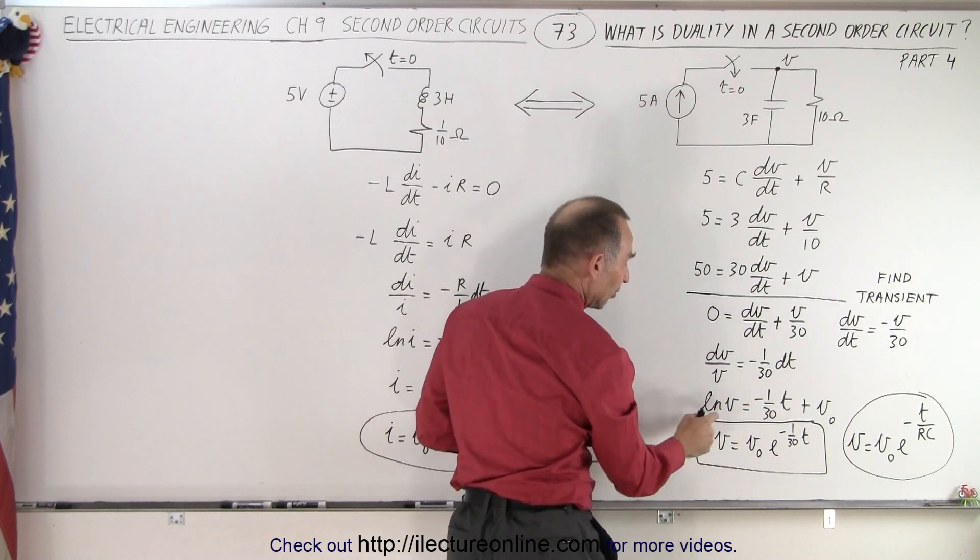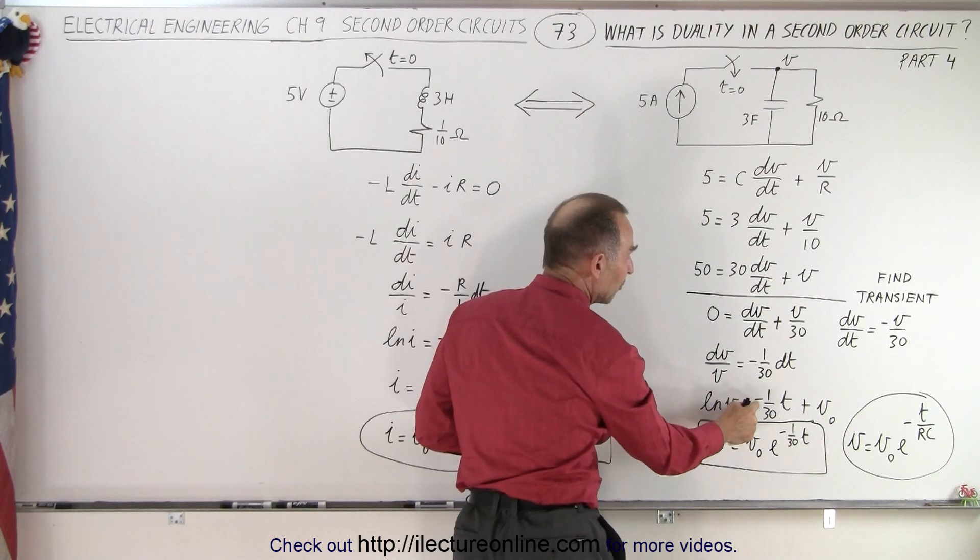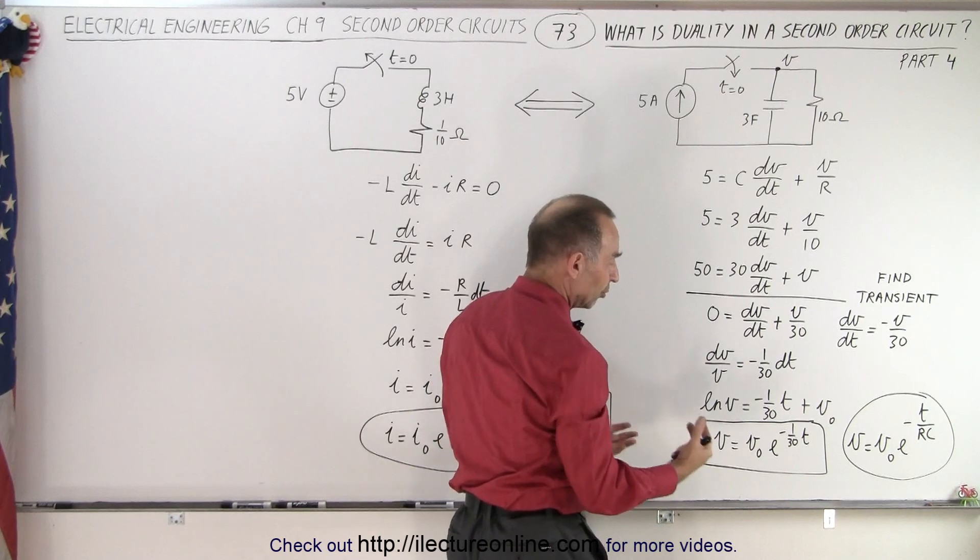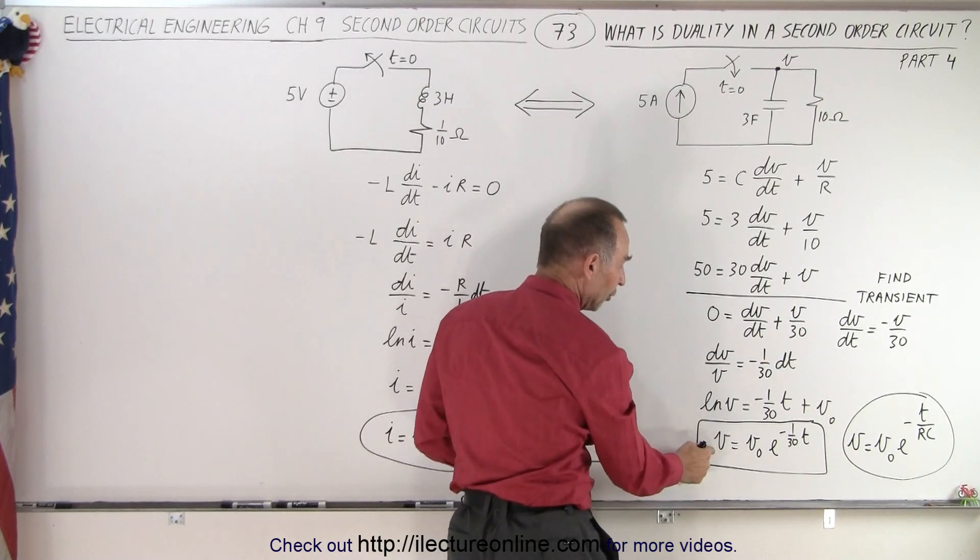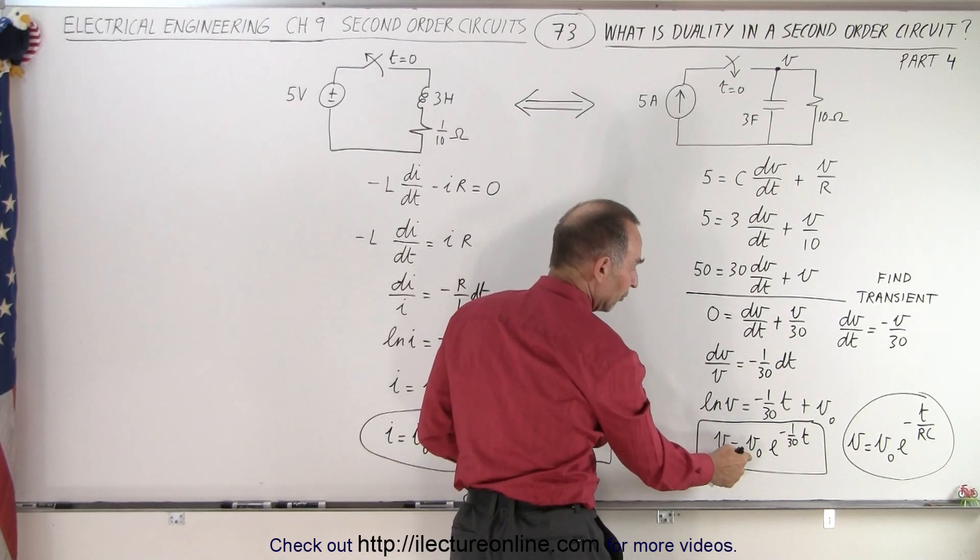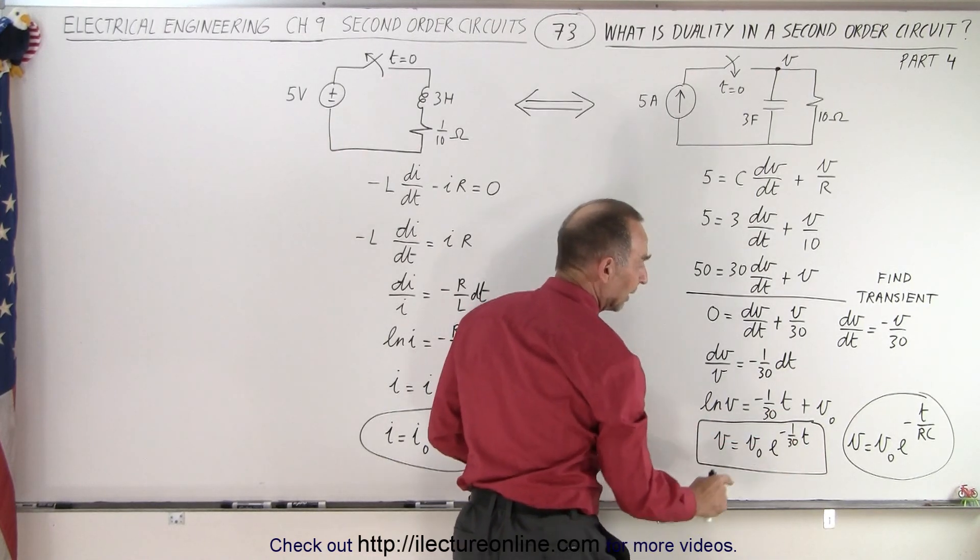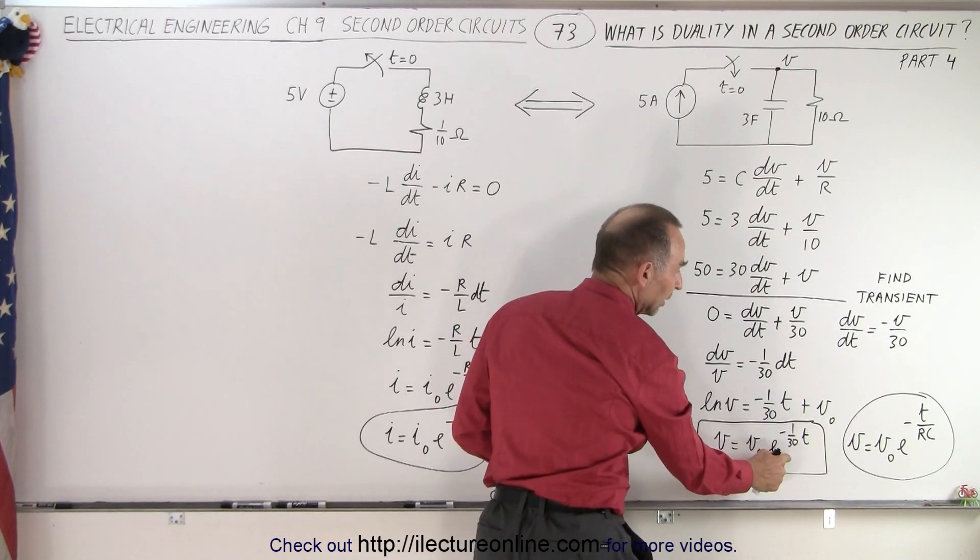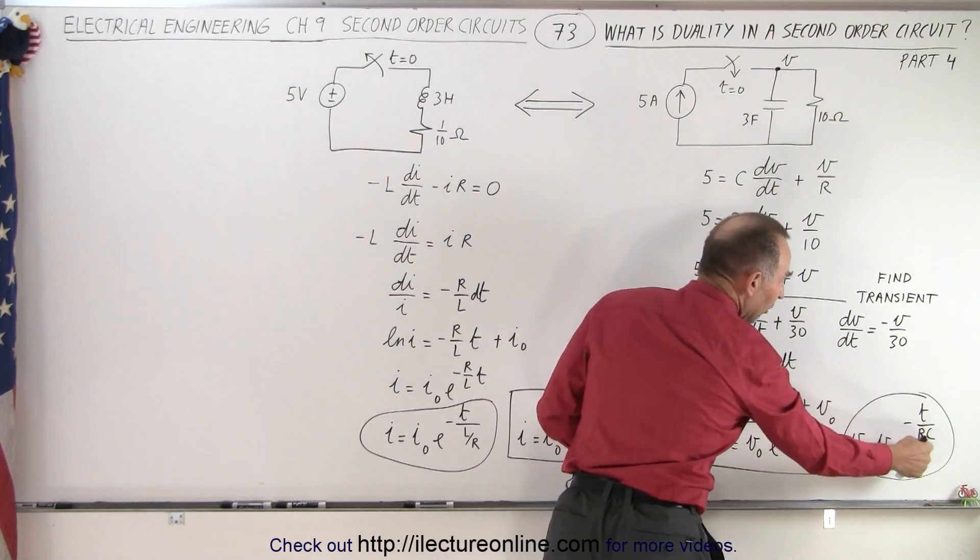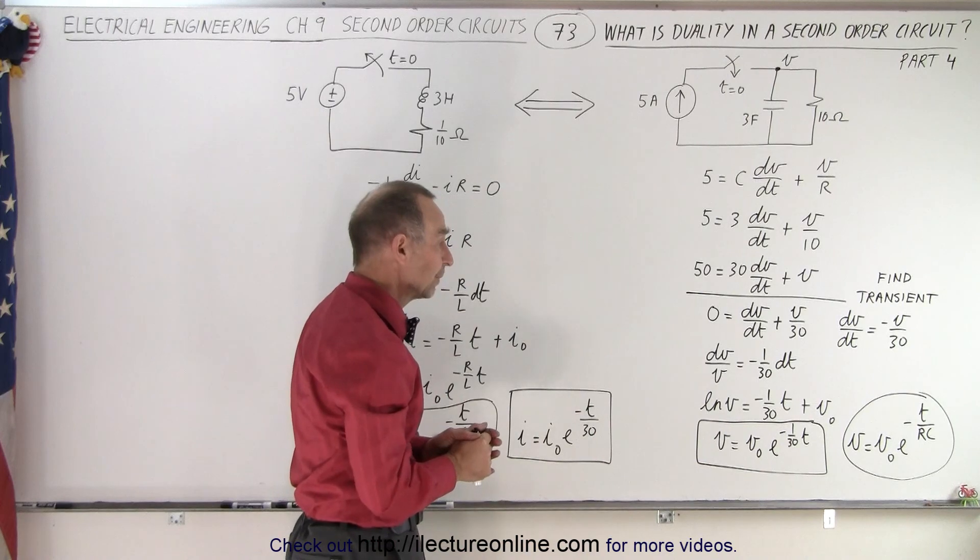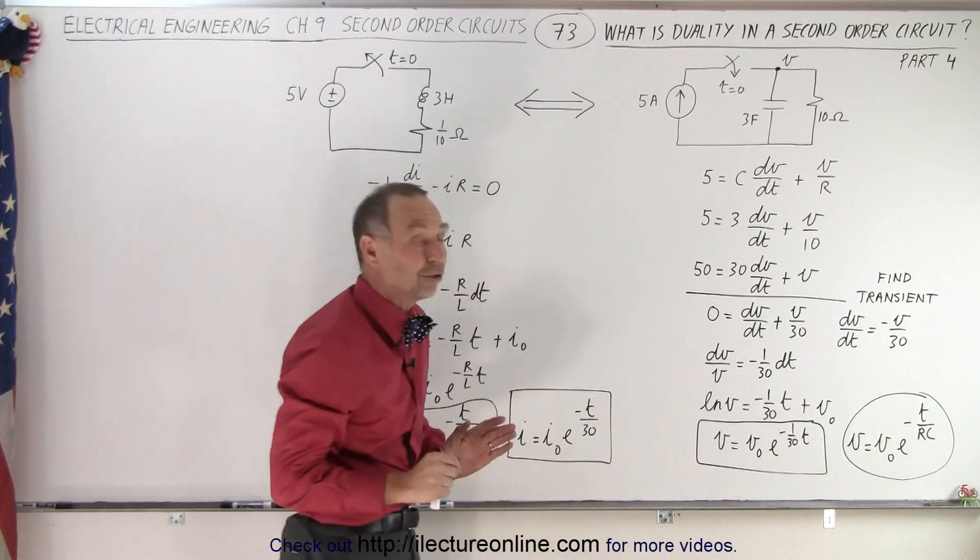We then take the integral of both sides, so this becomes the natural log of v equals minus 1/30 t plus a constant of integration, which is v sub naught, the initial voltage. And so the voltage as a function of time equals initial voltage times e to the minus 1 over 30t. Notice that 1 over 30 is the same as minus 1 over RC, which is the time constant in the RC circuit. Notice the form of that equation.